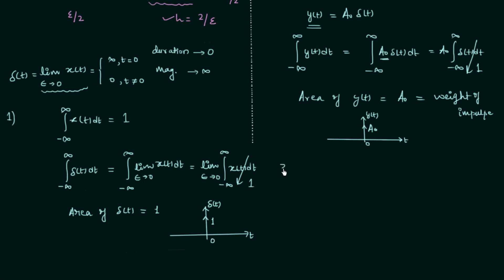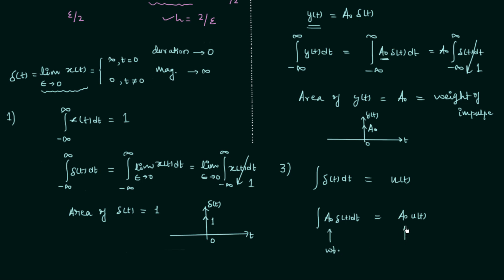Property number 3 is based on property 2. When you integrate a unit impulse signal, the result you get is a step signal U(t). When you integrate an impulse signal with weight A0, the step signal you get will be A0 times U(t). So A0 is the weight of the impulse signal, and A0 is also the step of the step signal — they are the same. Weight of the impulse signal equals the step of the step signal. This is property number 3.